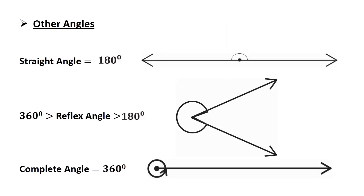Here I will explain three other types of angles. The first one is straight angle — an angle whose measure is equal to 180 degrees. The second one is reflex angle — an angle whose measure is greater than 180 degrees but less than 360 degrees. The last one is complete angle — an angle whose measure is equal to 360 degrees. These three types are just for your extra knowledge, as they have not been explained in your textbook.